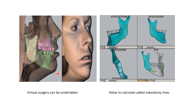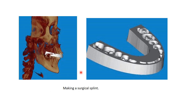Virtual surgery can also be performed using morphing software, allowing the patient to see on the computer how the face and lip relations would change after surgery. CBCT data also allows calculation of the safest osteotomy line — determining where to cut and which cut is safest. Finally, it enables the printing of a three-dimensional surgical splint to aid in fixing the maxilla and mandible after surgery.